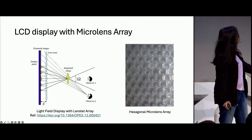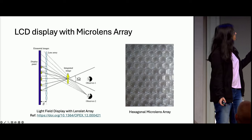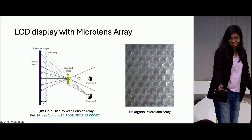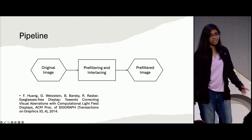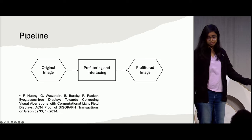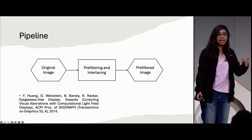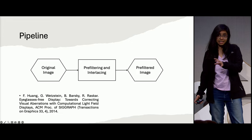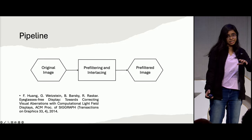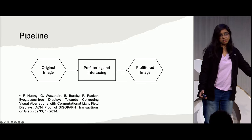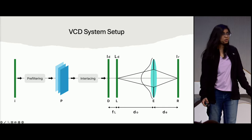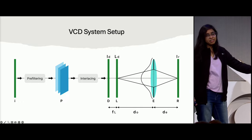This is how a microlens array looks like — I'm showing a hexagonal shaped microlens array here. In this project, we actually use square shaped ones. The basic pipeline of the vision correction display: we take some image we want to display, do some pre-filtering and interlacing. The pre-filtering and interlacing algorithms are taken from the SIGGRAPH paper on glass-free displays, and the pre-filtered image is then displayed on the vision correction display.